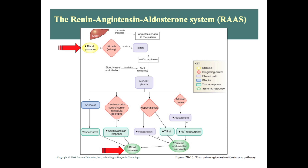In summary, when we have low blood pressure, we need to increase renin, which is released from the kidneys. Renin converts angiotensinogen into angiotensin-1. Angiotensin-1 is then converted to angiotensin-2 using the ACE enzyme, which is released by the blood vessel endothelium. These effects ultimately increase blood pressure.